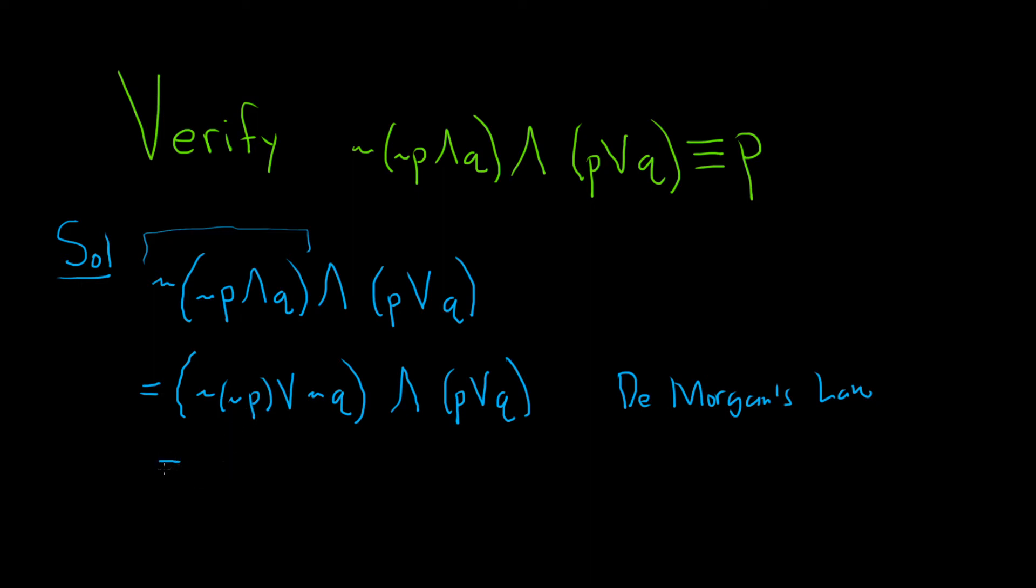Which is just the original statement. So this will be parentheses p or not q and then we have p or q. And this is by what's sometimes called the double negative law.